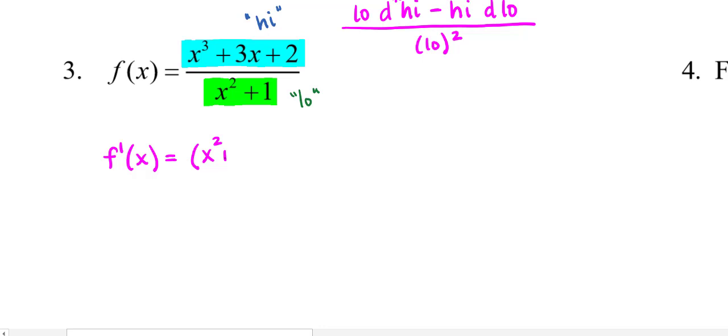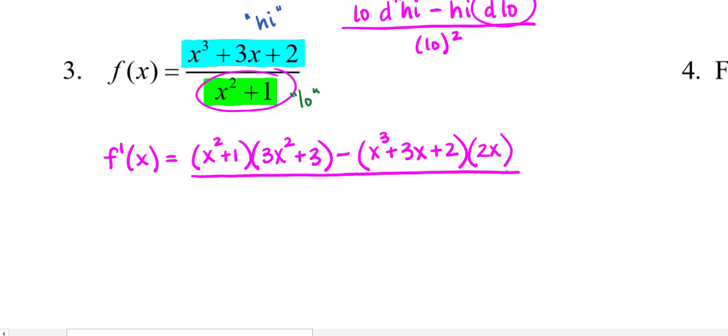Okay so if it just says low, that means you copy down the low. The low is x squared plus 1 as a factor. So low d high, so I'm going to multiply that by the derivative of the high, which is the derivative of the blue, and that would be 3x squared plus 3 just using power rule, minus the high—so copy down that blue high, d low. So now here's where I'm taking the derivative of the low. So again power rule would just be 2x all over low squared.